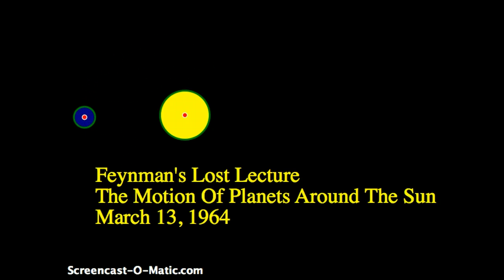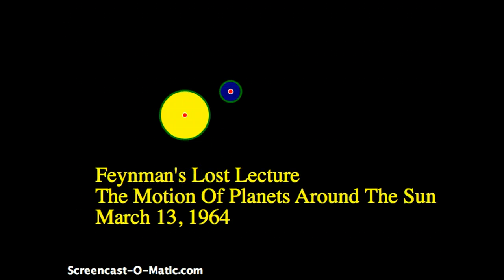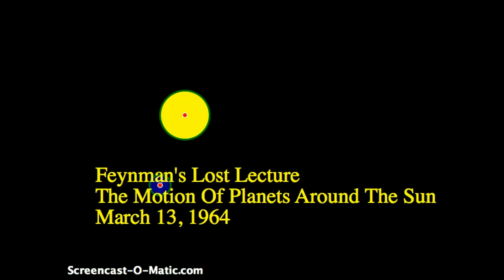Well, he did this lecture on March 13, 1964, explaining why planets go around the sun in an ellipse. And what was lost about this lecture was they had a tape of it and they also had photographs of his diagrams on the blackboard. They lost both of those.